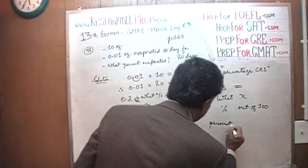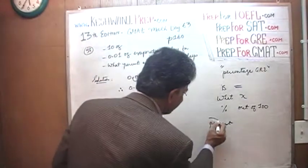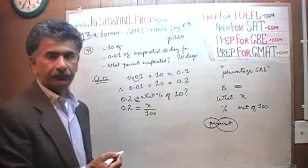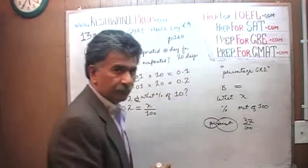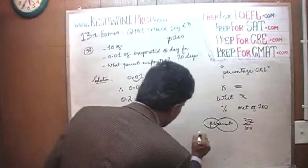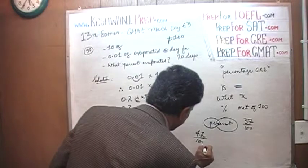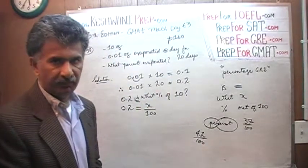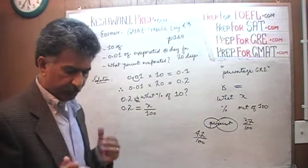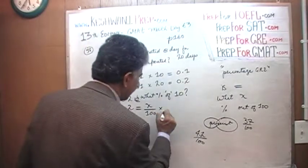Percent means over 100. Percent means out of 100. That's what the word percent literally means. Percent means per 100. 37% means 37 out of 100. 4.2% means 4.2 over 100. 96.7% means 96.7 over 100. Percent means over 100. Of means times.